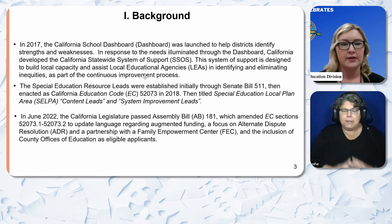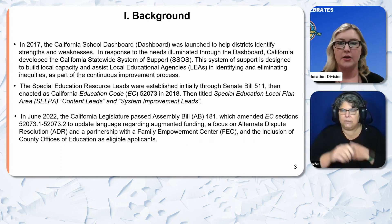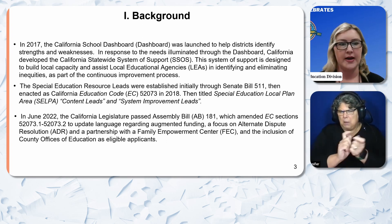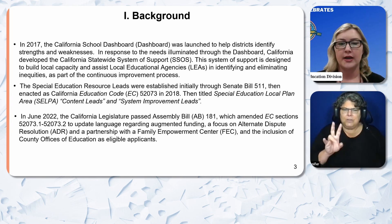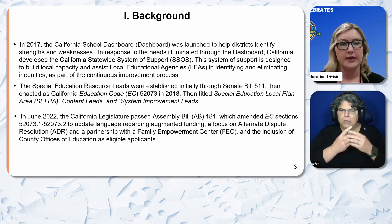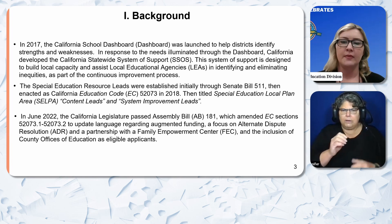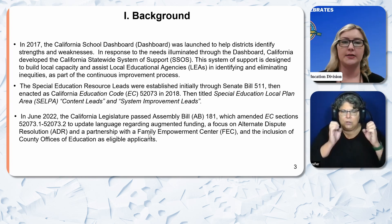In June of 2022, the California Legislature passed Assembly Bill 181, which amended Education Code Sections 52073.1 and 52073.2 to update language regarding augmented funding, a focused alternate dispute resolution (ADR), and a partnership with Family Empowerment Centers, and the inclusion of county offices of education as eligible applicants.